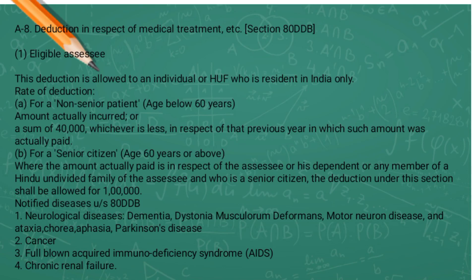Let's discuss the various notified diseases under section 80DDB. There are various neurological diseases like dementia, motor neuron disease, chorea, ataxia, Parkinson's disease, cancer, full-blown acquired immune deficiency syndrome, and chronic renal failure. These are the various diseases under section 80DDB for which the assessee has actually paid any amount for medical treatment and can claim the deduction in respect of medical treatment.